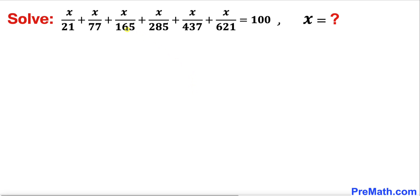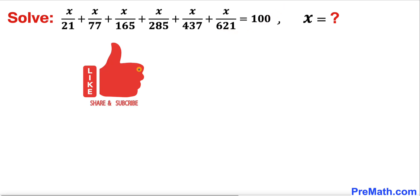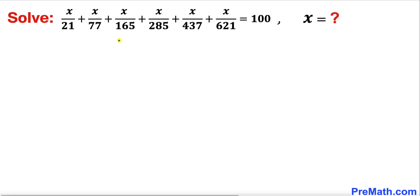Welcome to Pre-Math. In this video we are going to solve this given rational equation: x divided by 21, plus x divided by 77, plus x divided by 165, plus x divided by 285, plus x divided by 437, plus x divided by 621, equals 100. Please don't forget to give a thumbs up and subscribe. Let's get started with the solution.